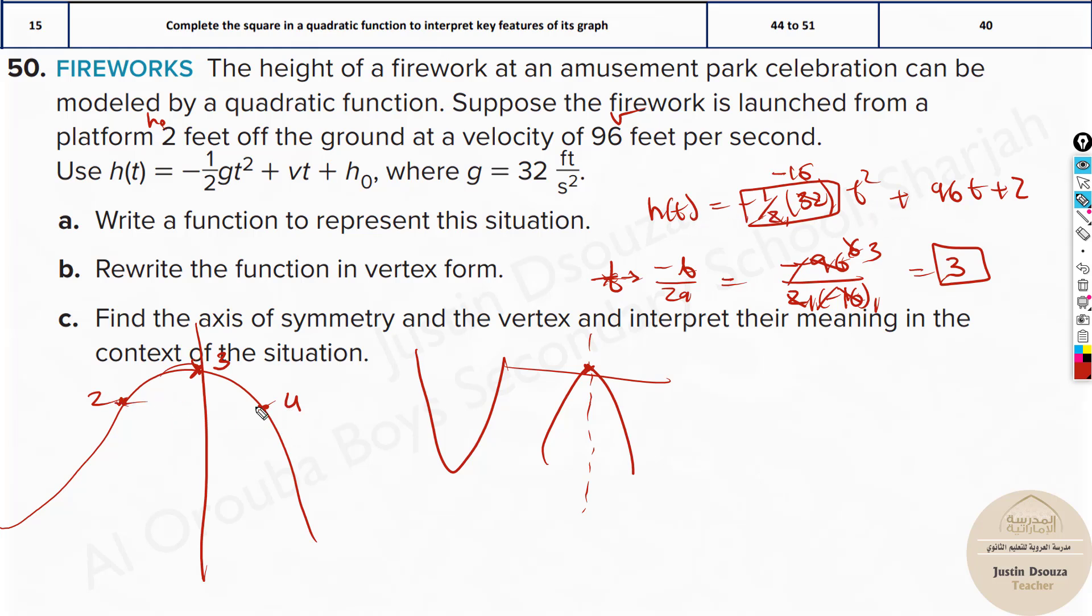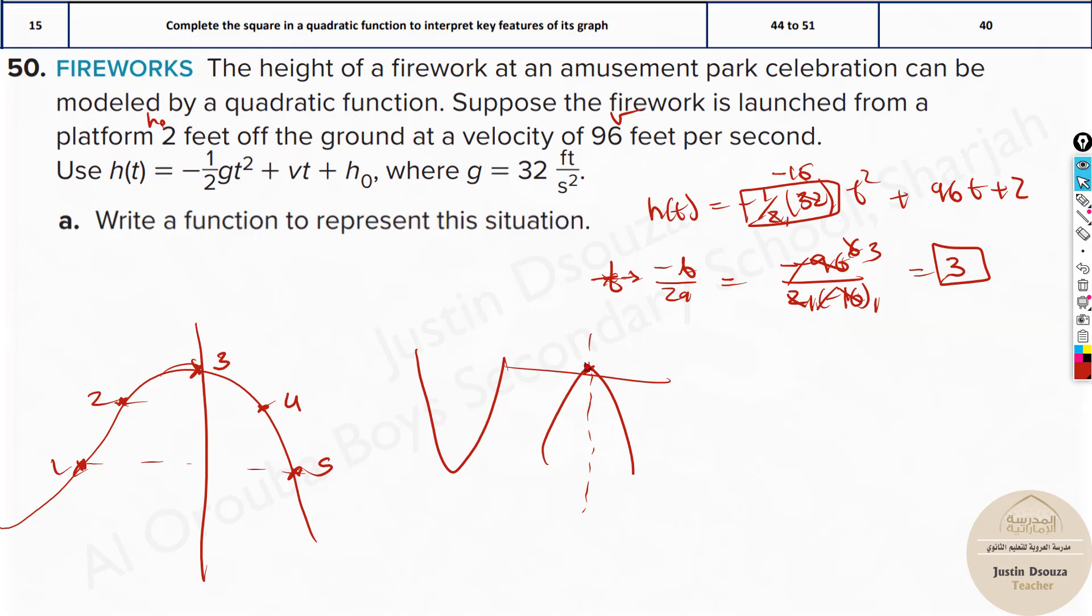After 2 seconds—because time is given—after 2 and 4 seconds, the height will be the same for the firework. Imagine at 1 and the next one is 5. The height will be the same for the firework. That is what we understand over here. Let's look into the answers.